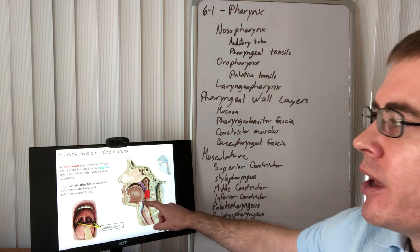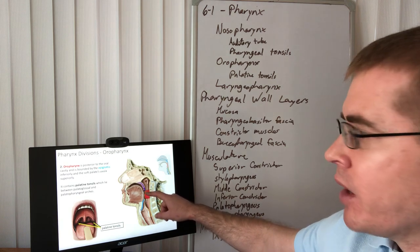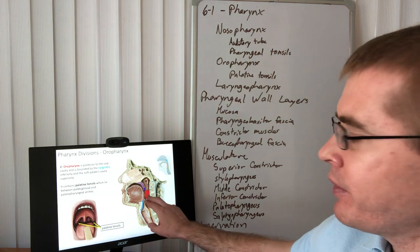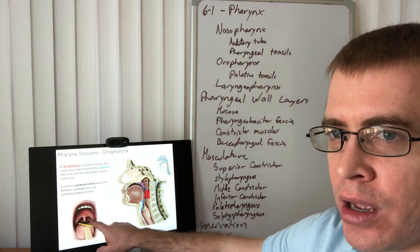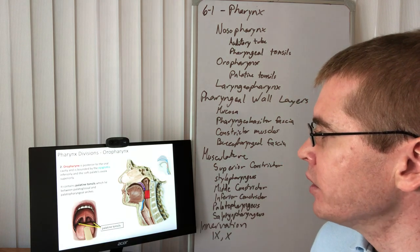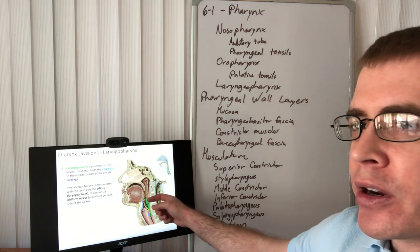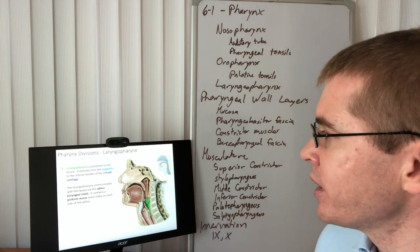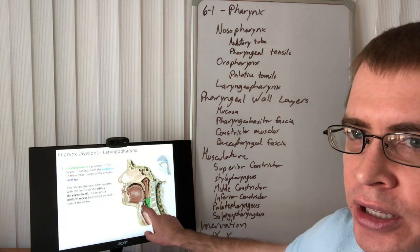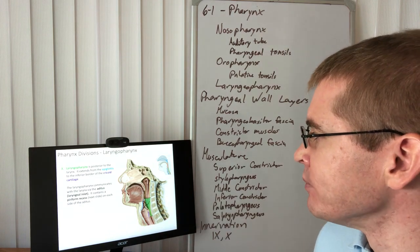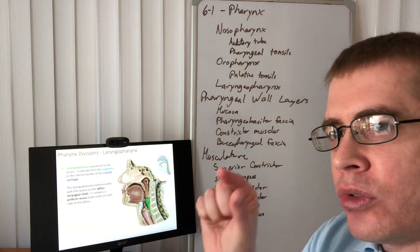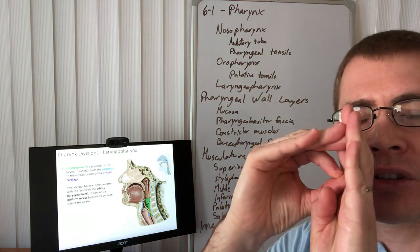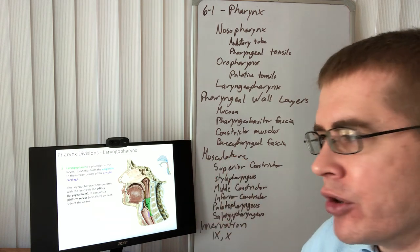Below the uvula but above the epiglottis, we have the oropharynx, which connects the oral cavity to the laryngopharynx below. Within this cavity we have the palatine tonsils, which can be visualized through the oral cavity. Next, the laryngopharynx extends from the epiglottis down to the inferior portion of the cricoid cartilage. It contains the aditus, which is the laryngeal inlet — the opening into the airway. On either side of that opening is a recess called the piriform recess.